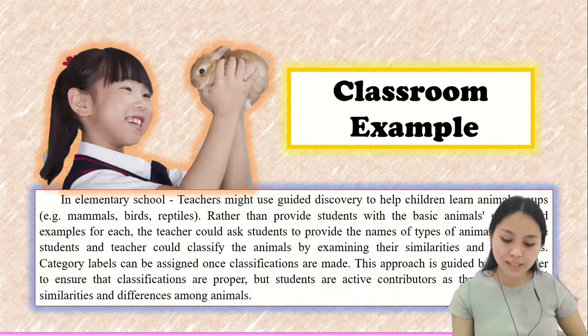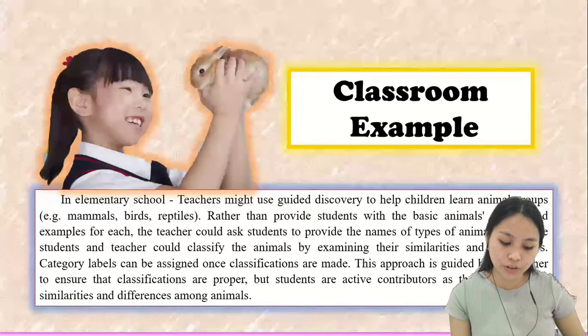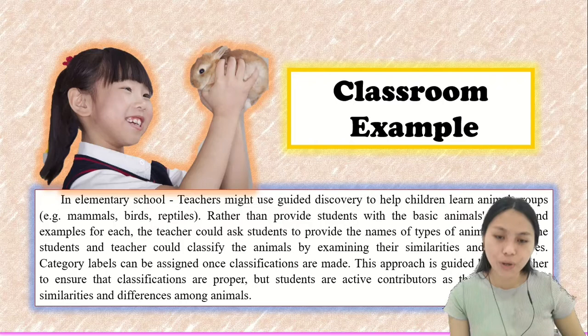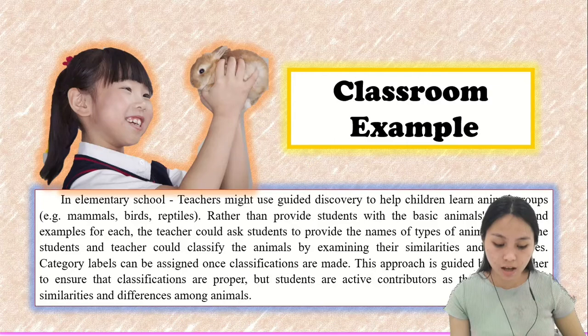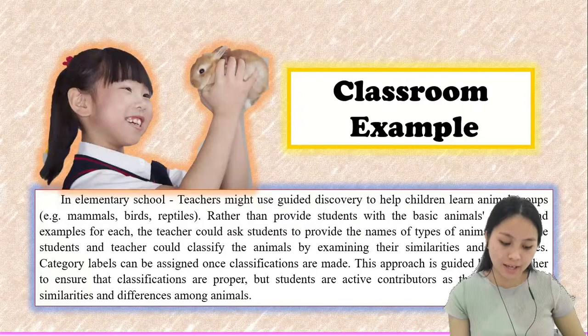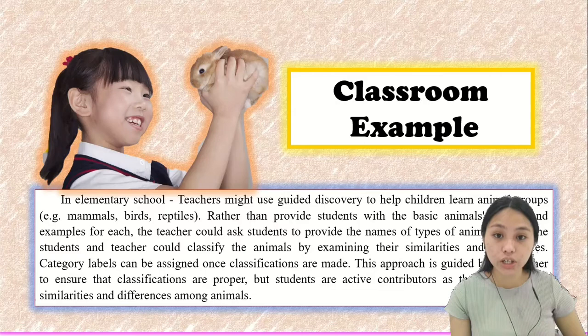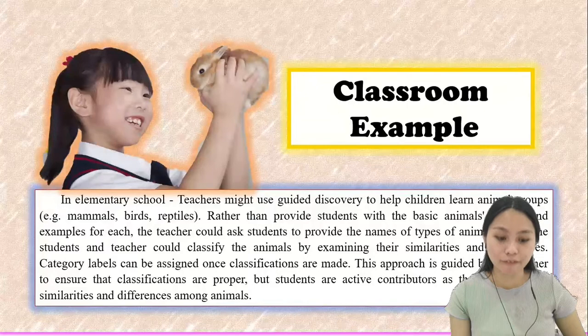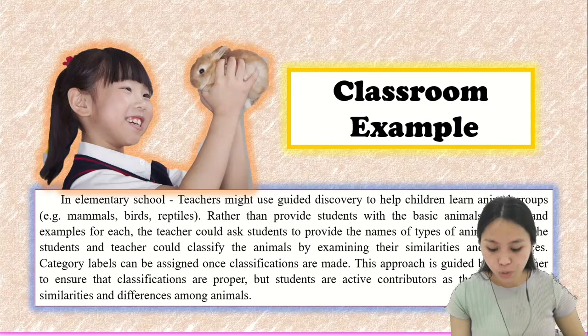For a classroom example, in elementary school, teachers might use guided discovery to help students learn animal groups — mammals, birds, and reptiles. Rather than providing students with the basic animal groups and examples for each, the teacher could ask students to provide names and types of animals. The students and teacher could then classify the animals by examining their similarities and differences, and category labels can be assigned once classifications are made. This approach is guided by the teacher to ensure that classifications are proper.